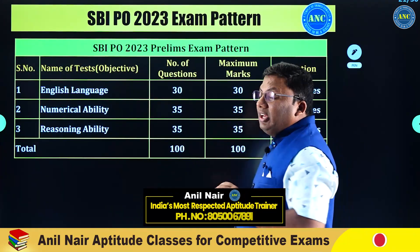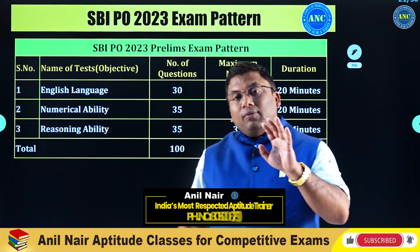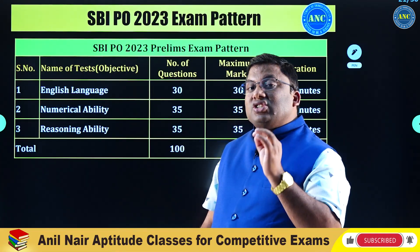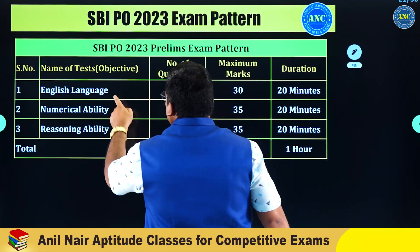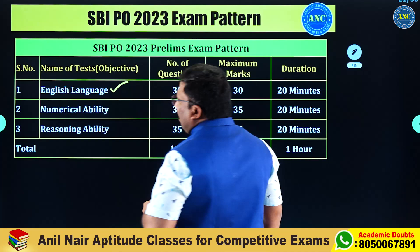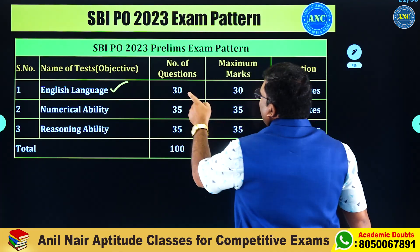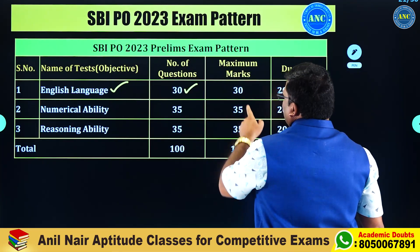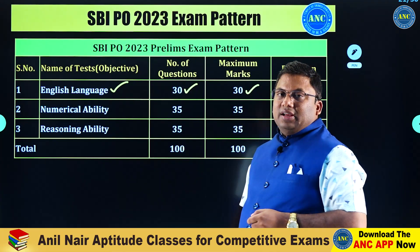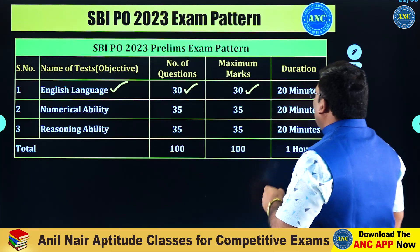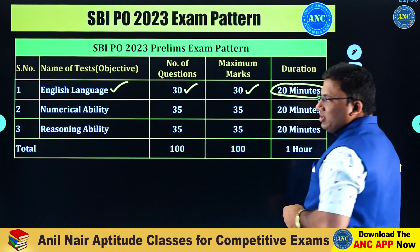This is the pattern of the SBI PO prelims paper. It mainly checks a student on three parameters. One is your language skills, which is the English language section. English has 30 questions, each question one mark, so 30 marks maximum.